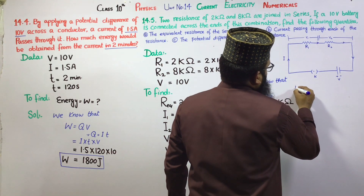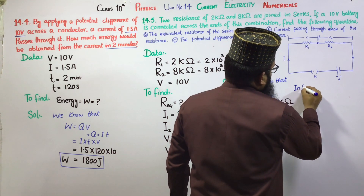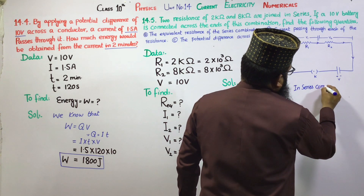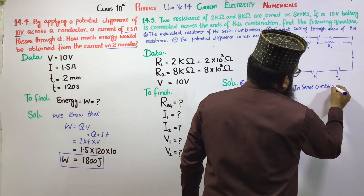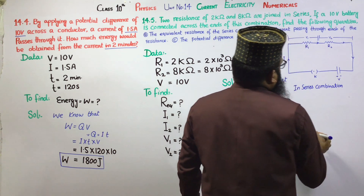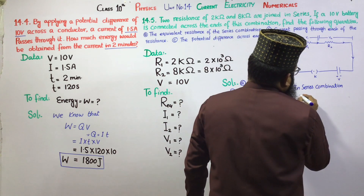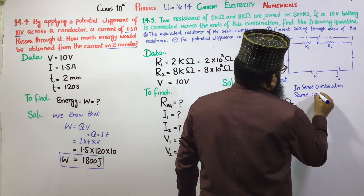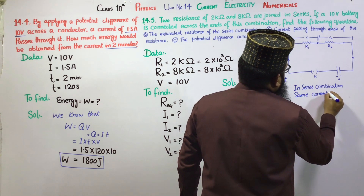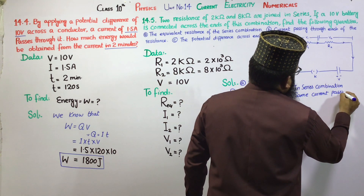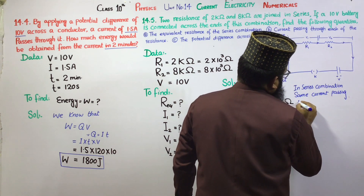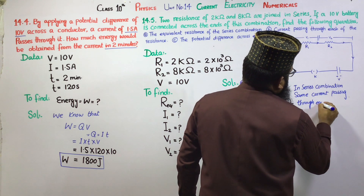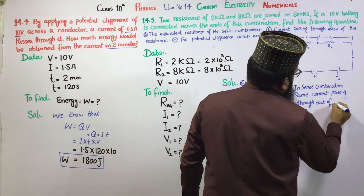In series combination, the same current is passing through each of the resistances.